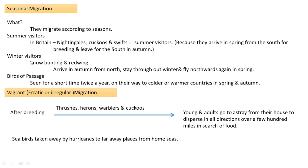Winter visitors are another category. Examples are snow bunting and red bee. They arrive in autumn from the north and stay throughout the winter season, then fly back towards the north with the advent of spring.